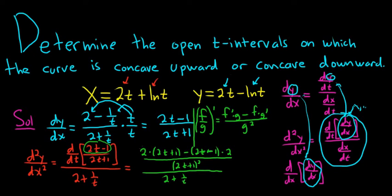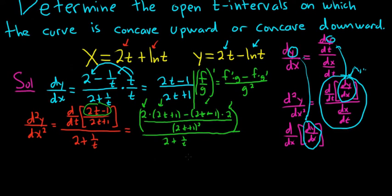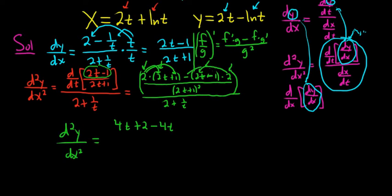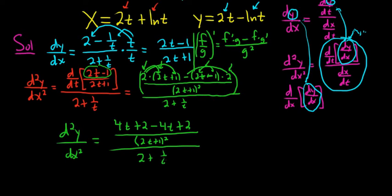That's all over 2 plus 1/t. Let's verify: derivative of the top is 2, times the bottom, minus the top times the derivative of the bottom — yes — all over the bottom squared, then divided by dx/dt. We want to see when this is positive or negative for concave up and concave down. Expanding: 2 times 2t is 4t, then we have 2, minus 4t — the 4t's cancel — and then negative times negative is positive, so plus 2. That's all over (2t plus 1) squared, all over 2 plus 1/t.